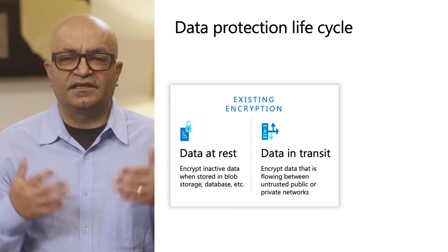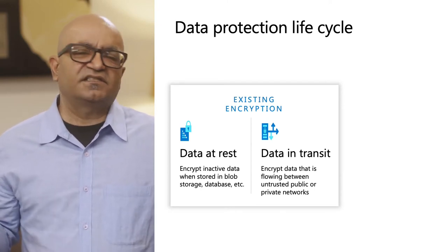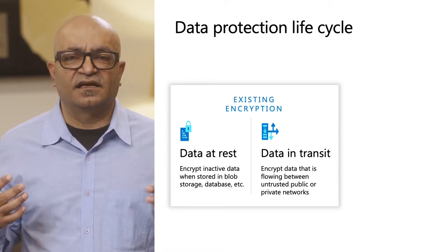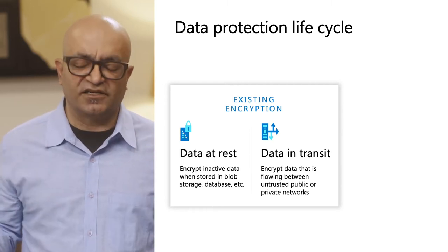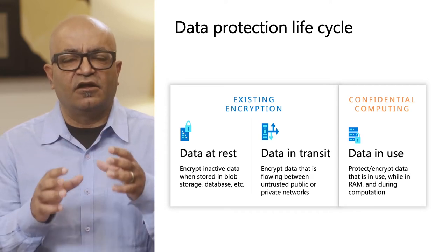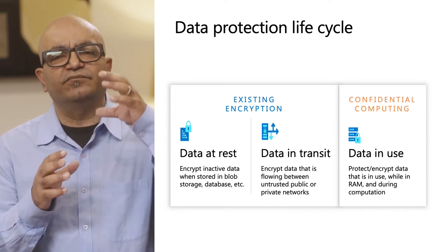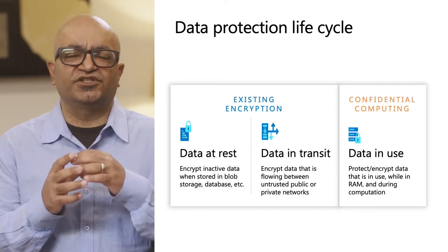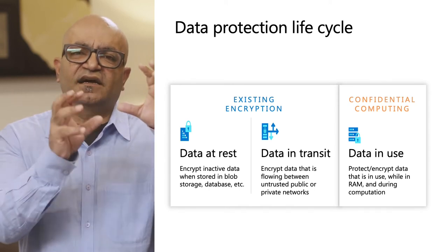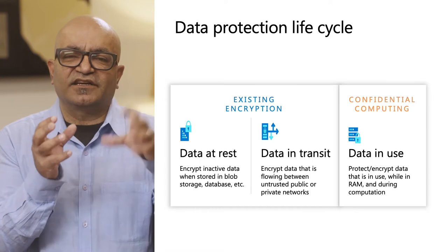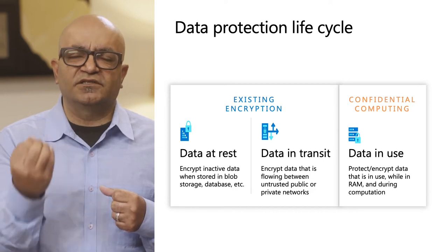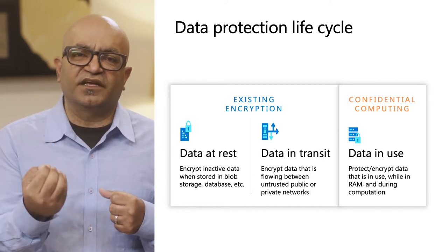Similarly, data in transit — data moving between devices. Just 10 years back, we were still sending HTTP traffic, but now HTTPS and TLS are something that we use for all of our applications. But when data is actually being used — when your data is actually being computed on in the cloud, in your virtual machine, container, or application — your application reads the data in the clear, because it needs it in the clear so it can compute on it. That data being in the clear exposes it to a bunch of vulnerabilities and attacks, which confidential computing can help you protect against.